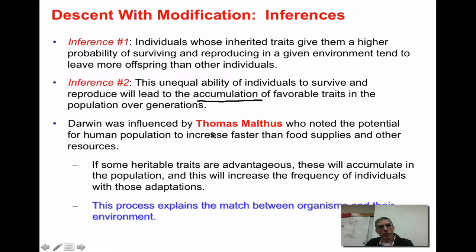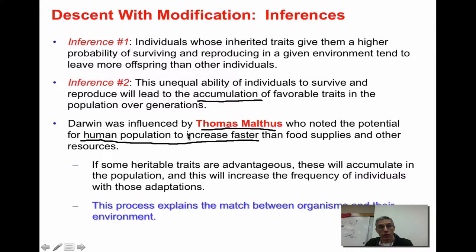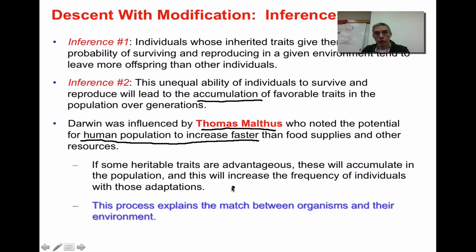Thomas Malthus was another individual really important to Darwin's ideas. Malthus noted the potential for the human population to increase faster than food supplies and other resources. In other words, we have the ability to reproduce at a rapid rate, but it can outpace the food and other resources needed to survive. This causes competition within our population. If some heritable traits are advantageous, they accumulate in the population, increasing the frequency of individuals with those adaptations — explaining the match between organisms and their environment.